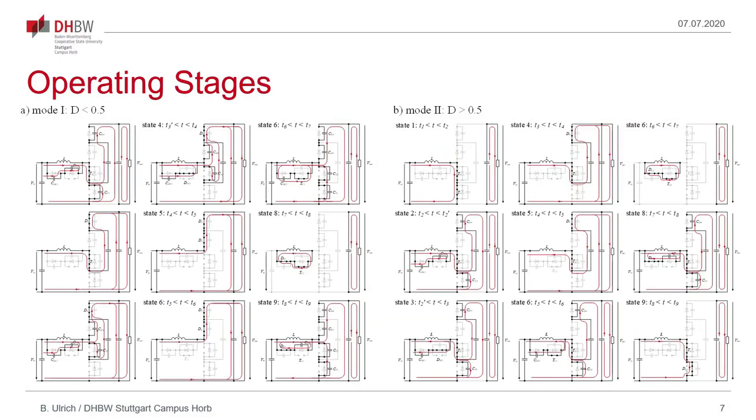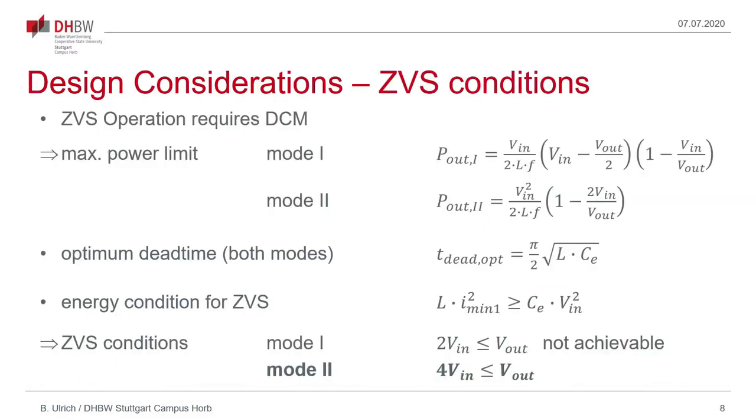On this slide the current flow paths and the different circuit configurations for both modes are shown. These are described in more detail in the paper. When designing the converter we have to meet three requirements to achieve a ZVS condition. These are summarized on this slide.